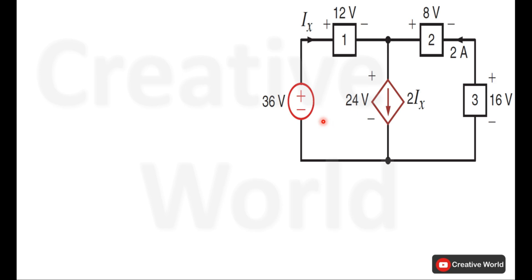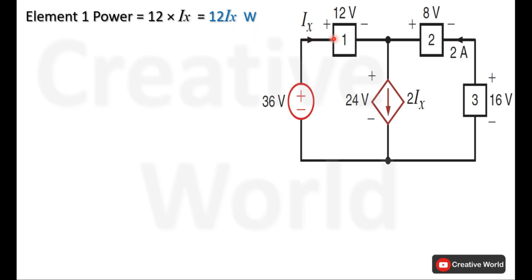Start calculating power from element 1. The voltage across element 1 is 12 volts and the current through it is Ix. The current is entering from the positive terminal and leaving from the negative terminal, so this current is taken with a positive sign. The power of element 1 will be 12·Ix.